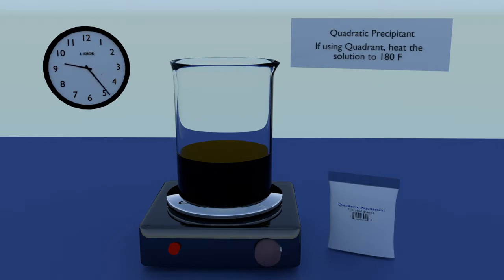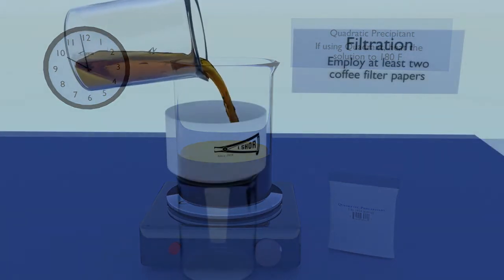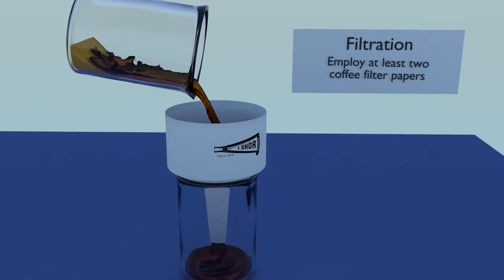A selective precipitant is added to the solution to turn the dissolved gold and nothing else back into solid in the form of particles. The solution is either decanted or filtered to recover the gold mud. The gold mud is then rinsed, dried, and melted.